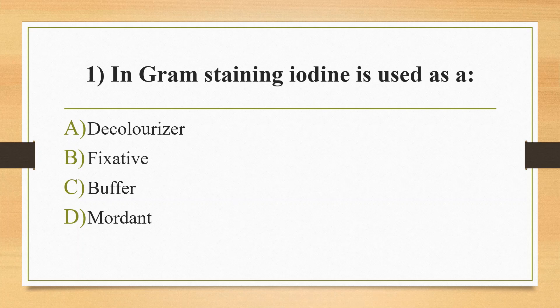Option A: decolorizer. Option B: fixative. Option C: buffer. Option D: mordant. The answer is option D, mordant. In Gram staining, the primary stain is crystal violet, the counter stain is basic fuchsin stain, and the decolorizer is the ethanol-acetone mixture.